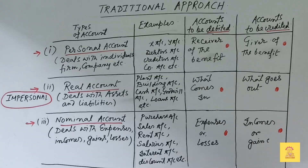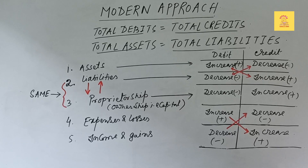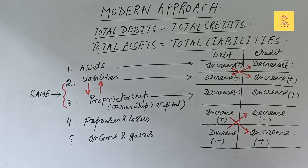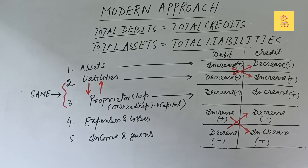Now we will discuss the modern approach of accountancy. This is another and more scientific approach — it is based on the application of the accounting equation. Look at the board — the modern approach is a little bit different from the traditional approach.